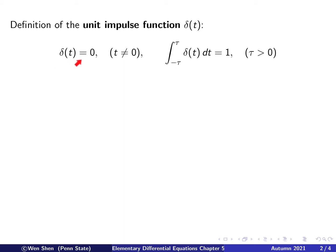Delta of t is 0 everywhere except when t equals 0. When t is not 0 it's all 0, and then right at t equals 0 it has some concentrated mass in the following sense: if you integrate this delta function around t equals 0 from negative tau to tau, for any small amount of tau as small as you like, this integral is 1. This holds for any tau bigger than 0.